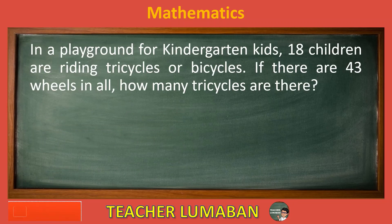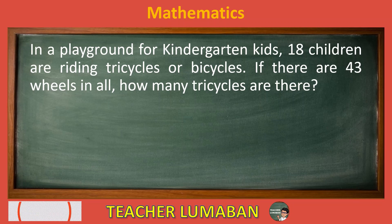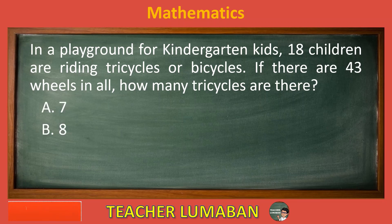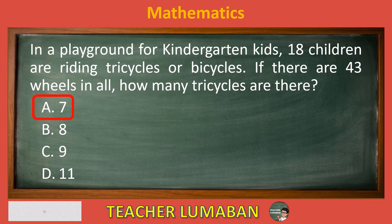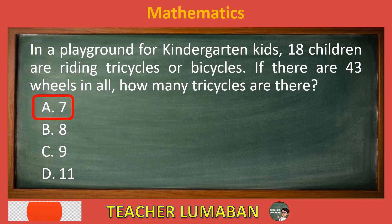In a playground for kindergarten kids, 18 children are riding tricycles or bicycles. If there are 43 wheels in all, how many tricycles are there? Letter A: 7. Letter B: 8. Letter C: 9. Letter D: 11. The correct answer is Letter A: 7. There are 7 tricycles.